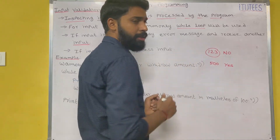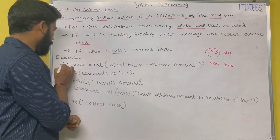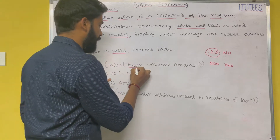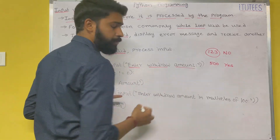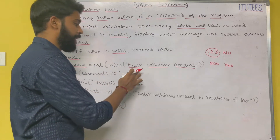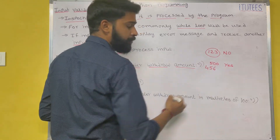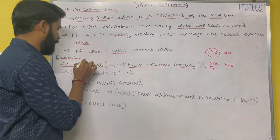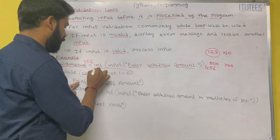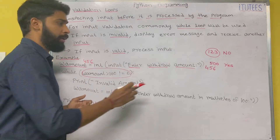This is the example program. Withdraw amount equals int of input — enter withdraw amount. So this message will display on the monitor: Enter Withdraw Amount. For example, I enter 456, so 456 is assigned to withdraw amount. After that, here I am going to validate the input.